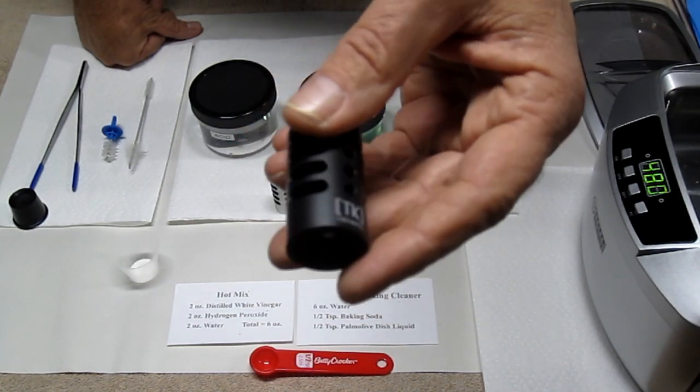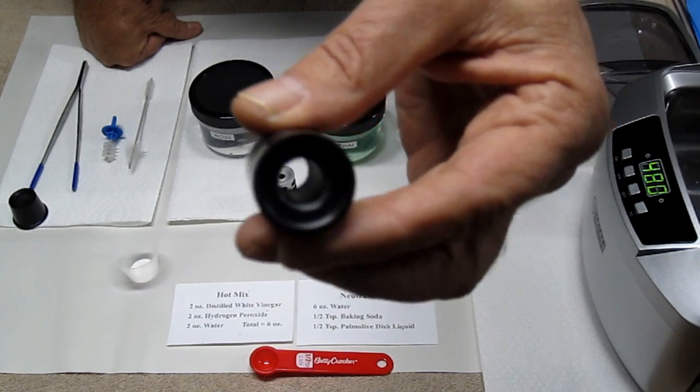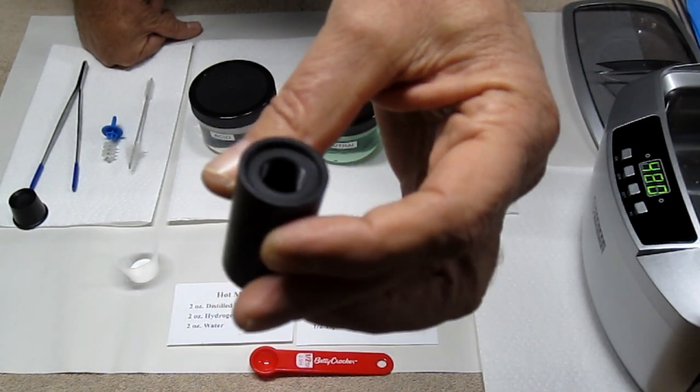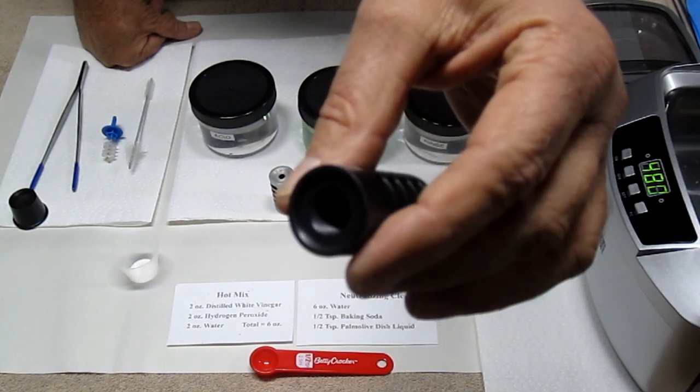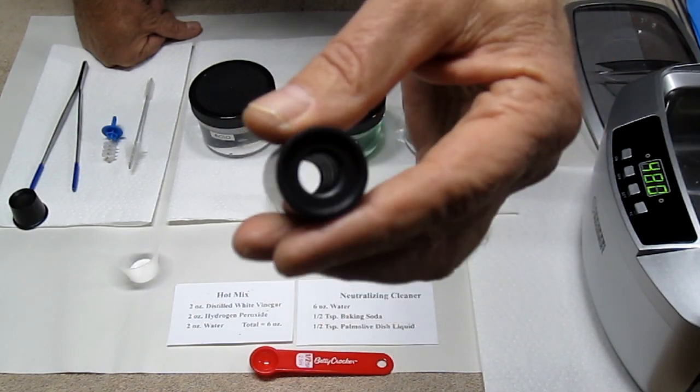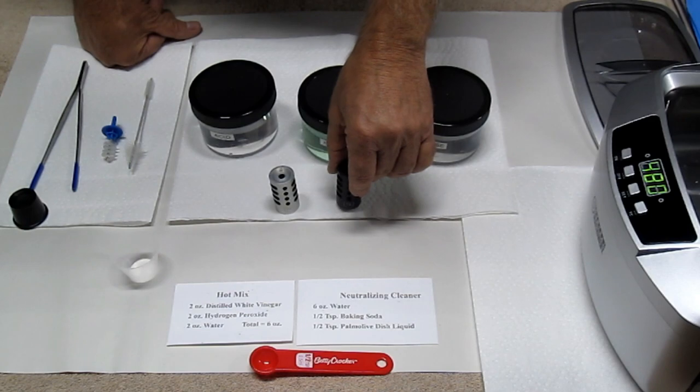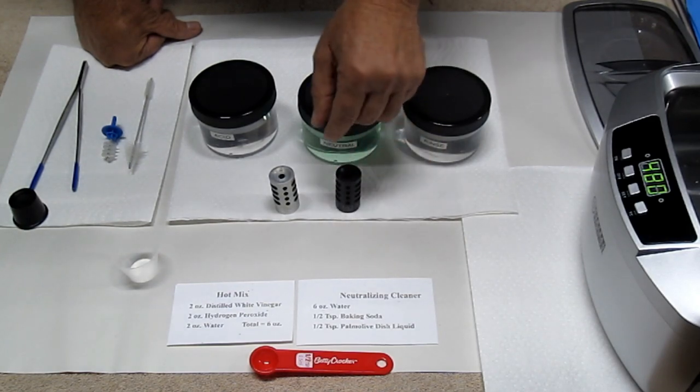This has been cleaned about every 300 rounds. You can see the inside is like brand new and that's pretty much how I try and keep my compensators. I try and keep up with them about every 300 rounds, pretty much every time I clean my gun I run my compensators through.